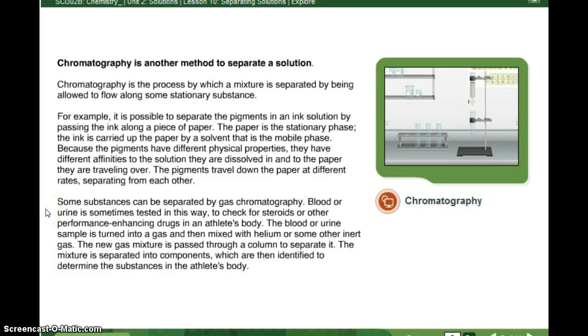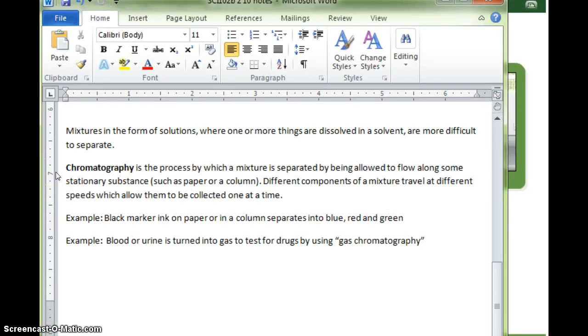Some substances can be separated by gas chromatography. Blood or urine is sometimes tested in this way to check for steroids or other performance-enhancing drugs in an athlete's body. The blood or urine sample is turned into a gas and then mixed with helium or some other inert gas. The new gas mixture is passed through a column to separate it. The mixture is separated into components, which are then identified to determine the substances in the athlete's body. I bet you had no idea how they did that. I added to our notes, chromatography is the process by which a mixture is separated by being allowed to flow along some stationary phase, such as paper or a column. Different components of a mixture travel at different speeds, which allow them to be collected one at a time. Example, black marker ink on paper or in a column separates into blue, red, and green. Another example, blood or urine is turned into gas to test for drugs by using gas chromatography.